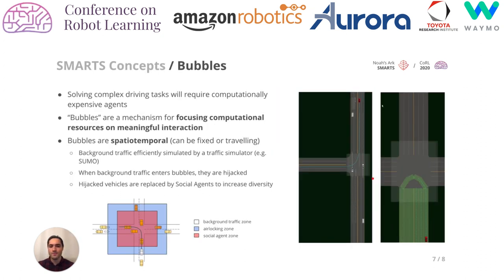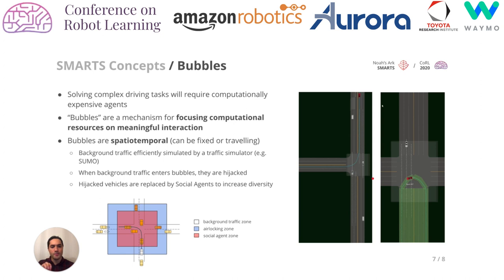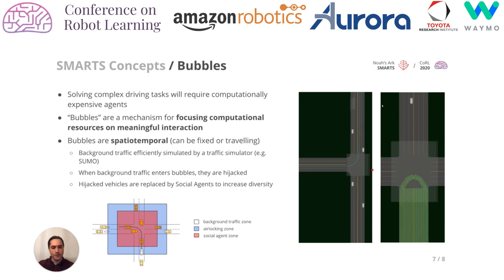That takes us to bubbles. What are these for? Complex tasks likely necessitate complex agents, which requires quite a bit of computational power. So what we really want to do is allocate computation where it matters most. In the examples on the right, we have some junctions. When a vehicle enters what is called a bubble, an agent takes control over it to handle the task, and then gives the vehicle back to the background traffic. It's really about focusing computation on the meaningful interaction where we want to learn.